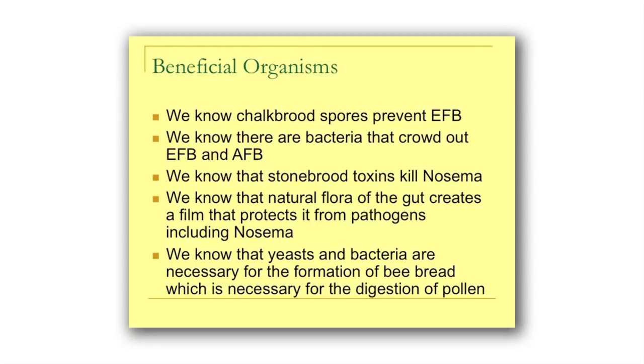Some organisms have beneficial effects even when they're pathogens. Chalk brood showed up in the 1960s in the US, and when it showed up, EFB almost disappeared. Even without an actual outbreak of chalk brood, its spores tend to prevent EFB. Stone brood — Aspergillus, the fungus that causes it — produces a toxin that kills Nosema, which is what fumagillin is essentially using. We know bacteria in the gut of the bee protect against AFB and EFB.